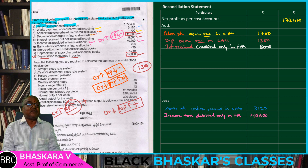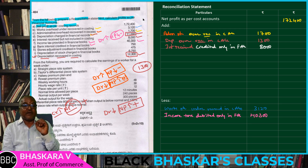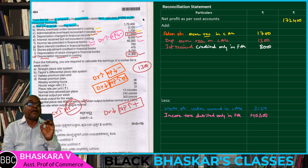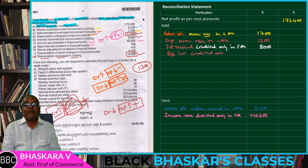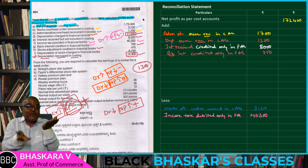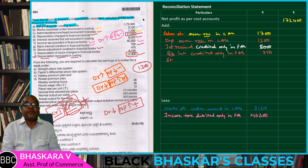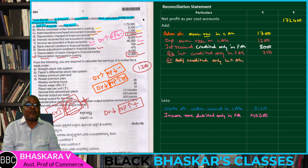Bank interest is credited in financial accounts — this is a credit side item, adding to net profit in financial accounts: 750. Next, stores adjustment credited — this is a credit side item, a profit side item, an add side item — stores adjustment credited only in financial accounts: 475.